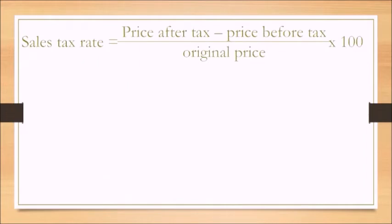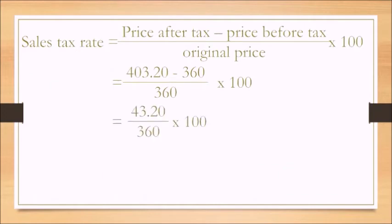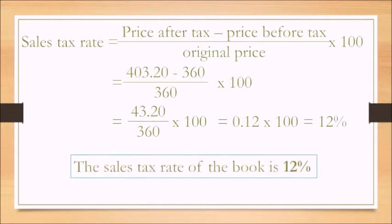Sales tax rate equals price after tax minus price before tax over original price times 100. So that would be $403.20 minus $360 divided by $360 times 100 is 0.12 times 100 or simply 12%. So the sales tax rate of the book is 12%.